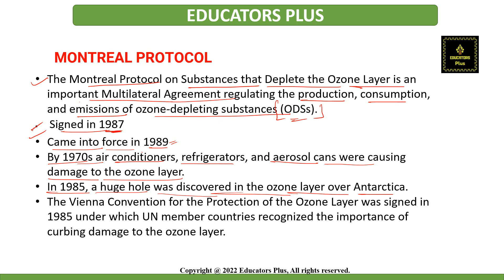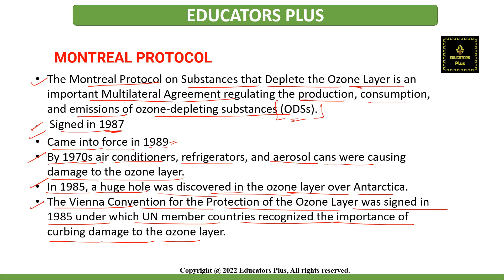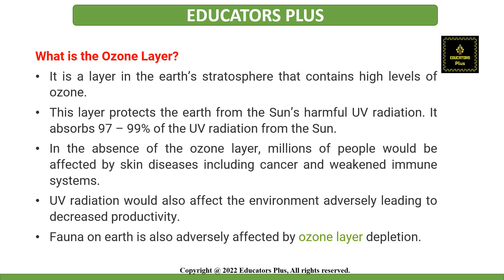The ozone hole basically allowed hazardous levels of ultraviolet radiations to reach the Earth's surface. It was in the Vienna Convention for the Protection of the Ozone Layer, signed in 1985, under which the United Nations member countries recognized this as an important issue and agreed on the need to curb the damage caused to the ozone layer. Countries then agreed to adopt the Montreal Protocol to further the goals of the Vienna Convention.